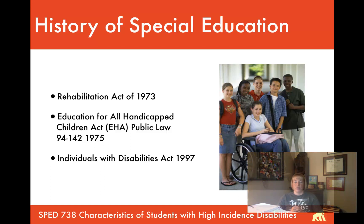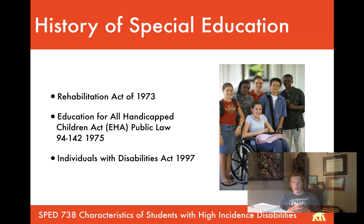PL 94-142 was passed in 1975 and established language that schools had to follow, guaranteeing and enforcing the right of children with disabilities to receive a free and appropriate public education — FAPE. That was the first time we saw FAPE used within a law, meaning whatever services students needed because of their disability to access their education had to be provided by the school free of charge. Over the years we've continued to refine what 'appropriate' means.